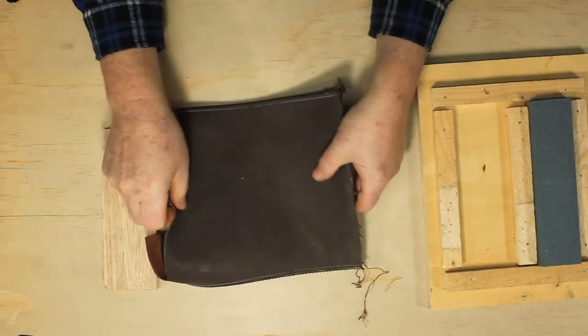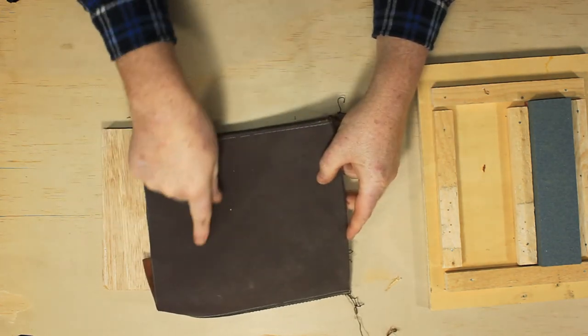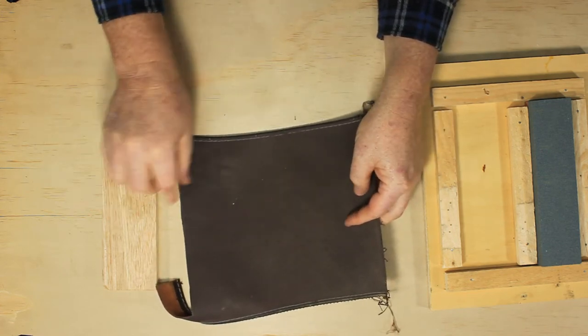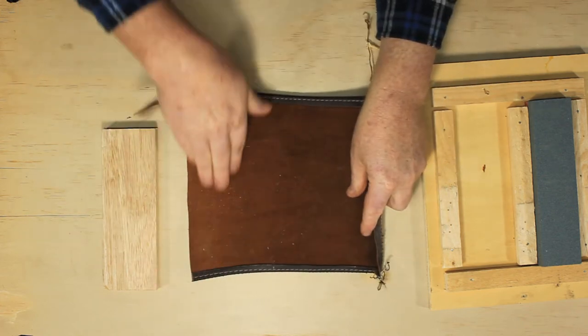I harvested this leather from an old lounge chair that someone had abandoned on the side of the road. It's been outdoors for at least a few months, but it's still in good enough shape for what we want to do. We're going to glue the smooth side to the wood and have the coarse side out.